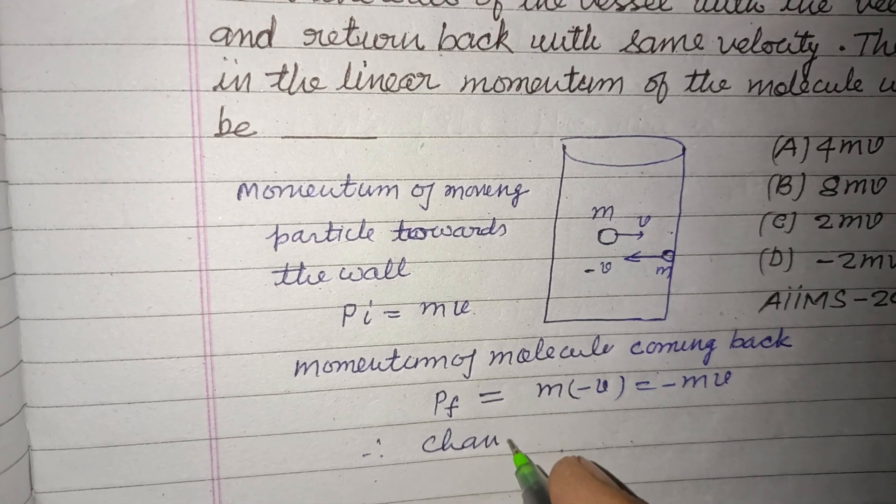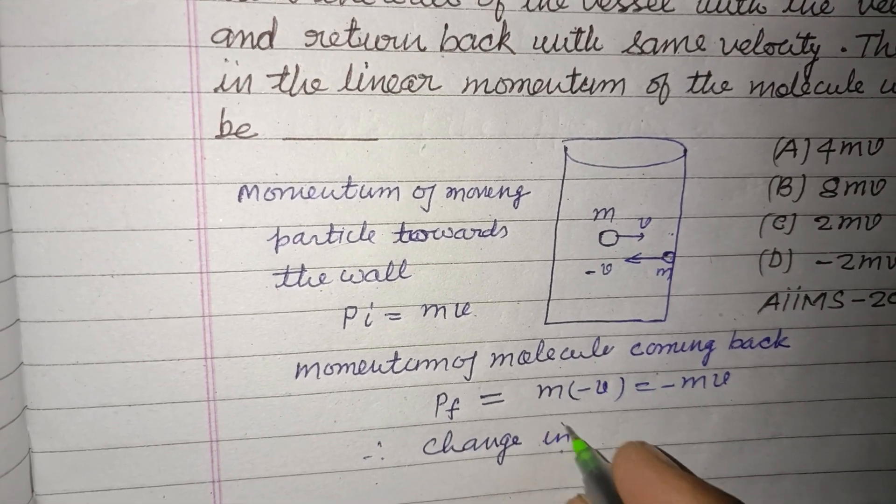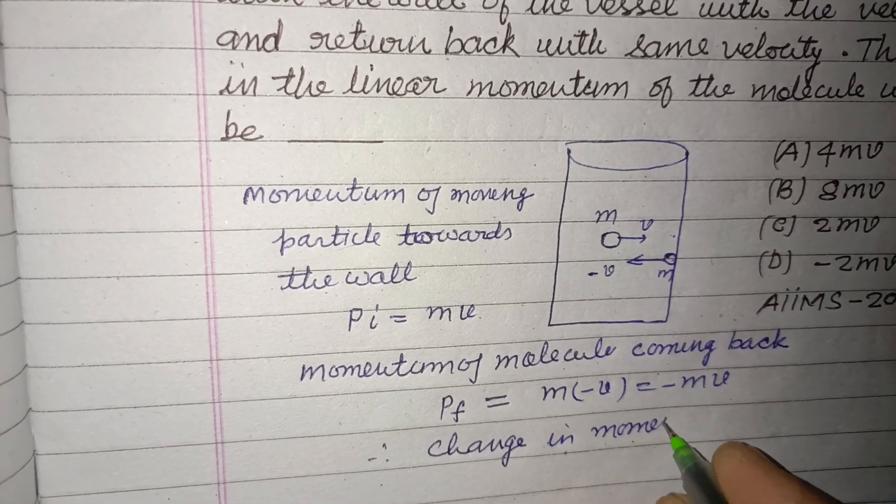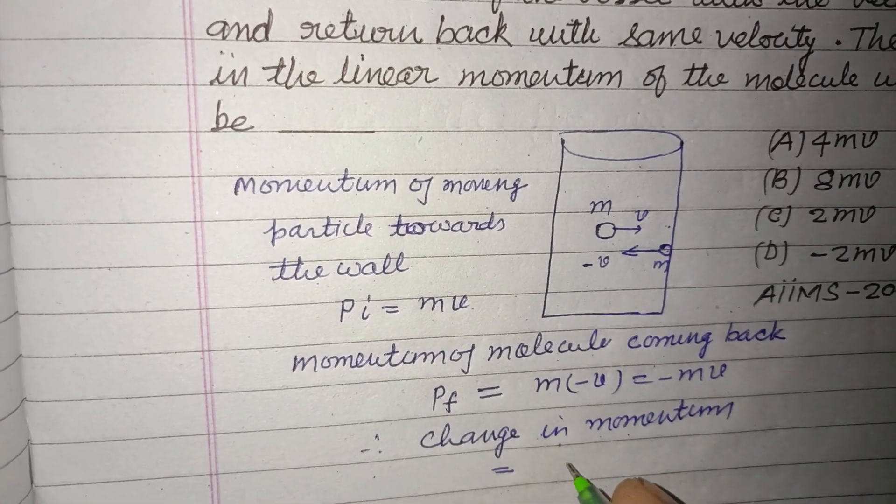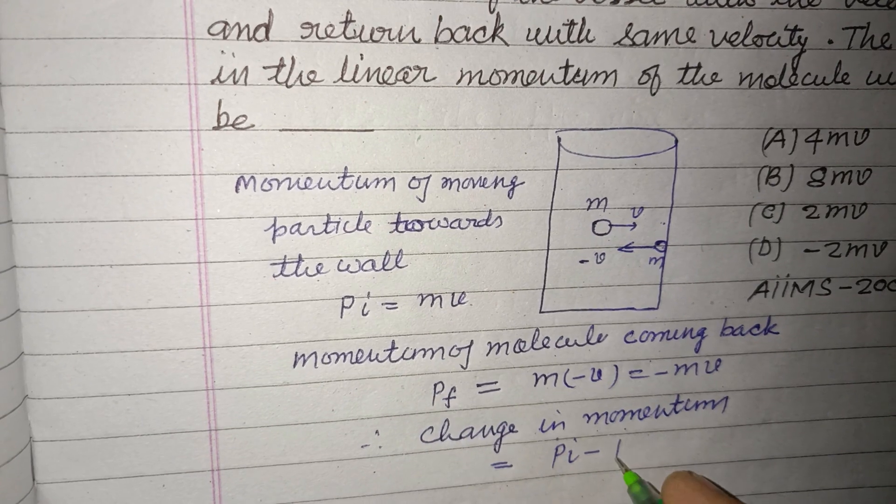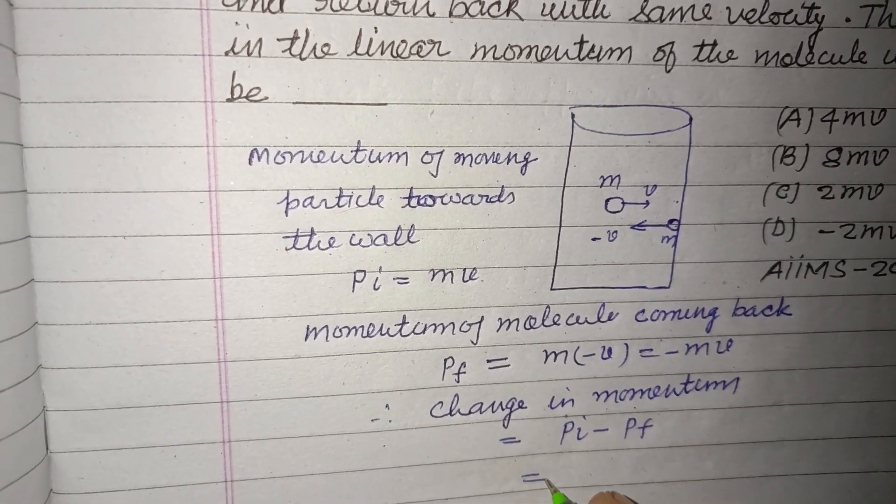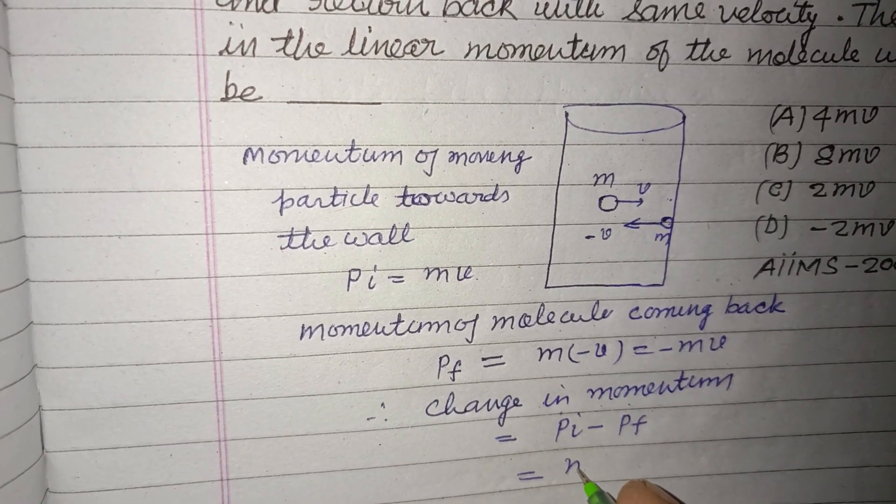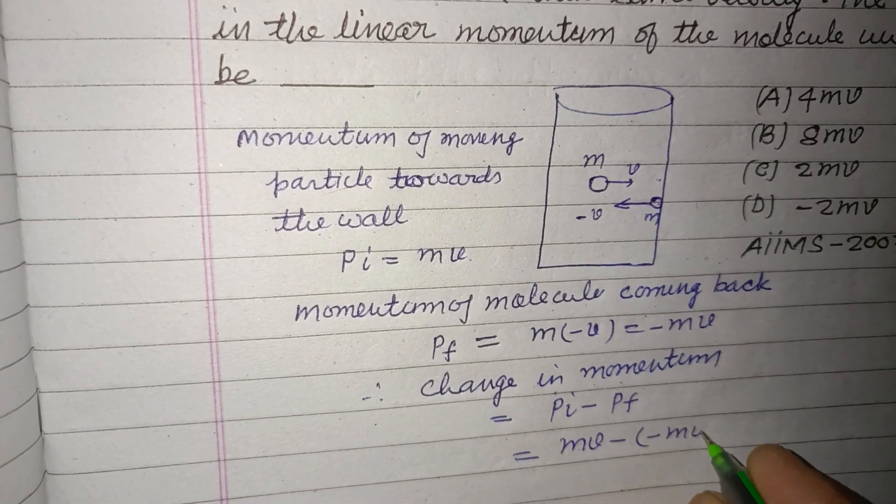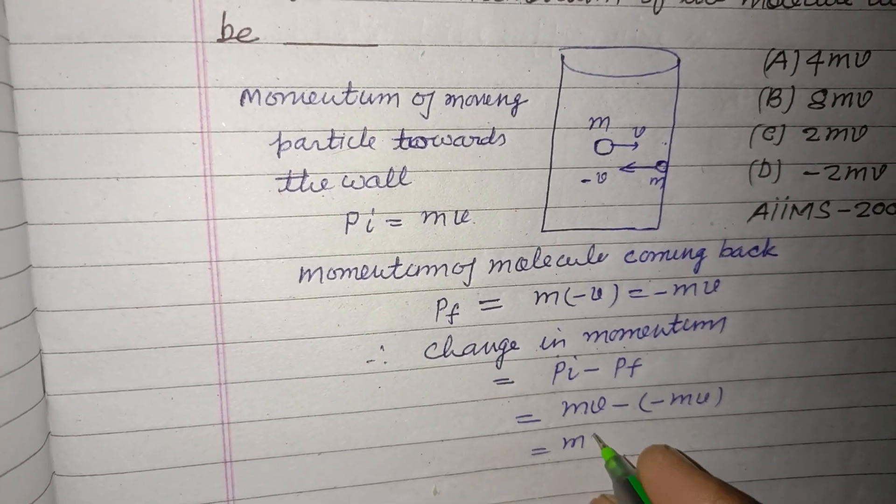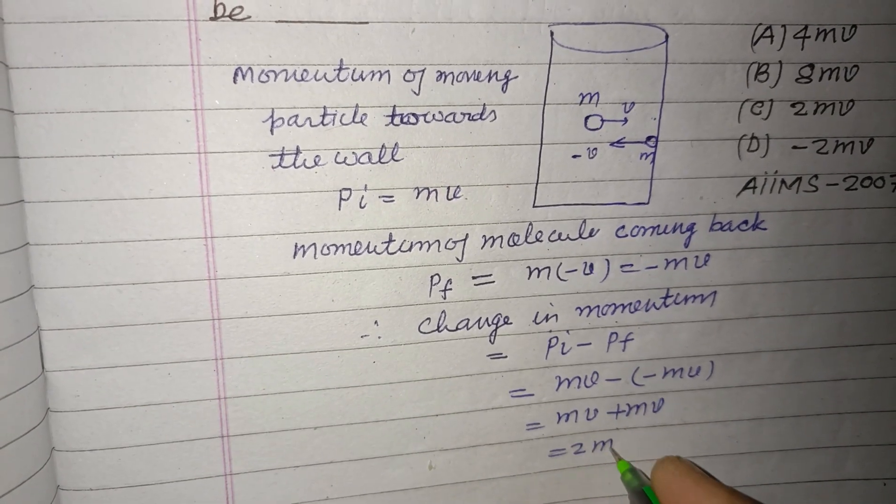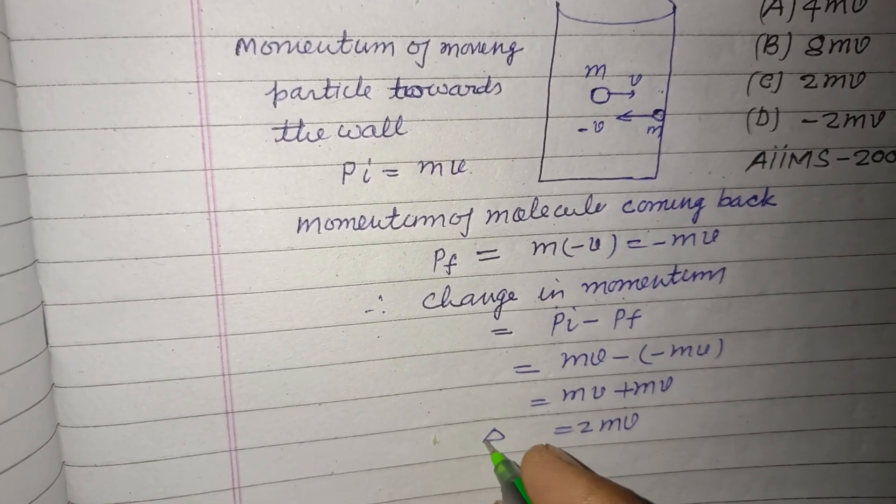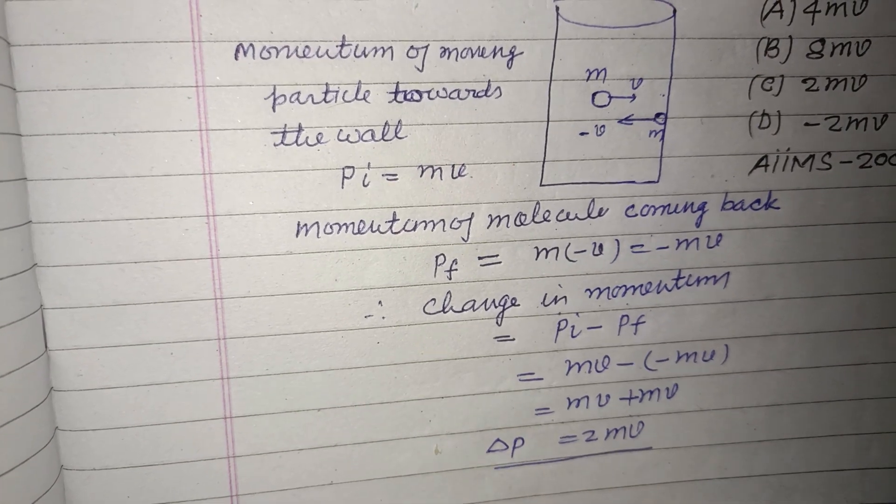Change in momentum equals P initial minus P final. So this is mv minus minus mv, which gives mv plus mv. This is 2mv. So change in momentum, del P, equals 2mv.